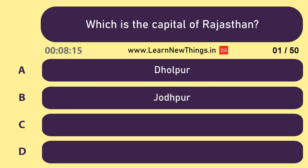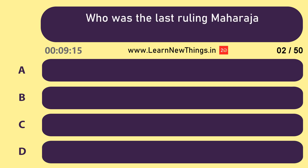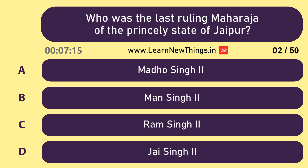Which is the capital of Rajasthan? Jaipur. Who was the last ruling Maharaja of the princely state of Jaipur? Man Singh II.